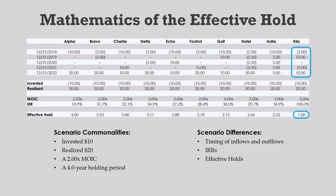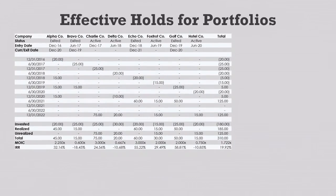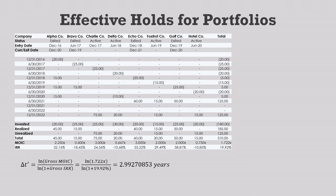So that's how the effective hold formula works for individual deals. But the power of the approach is most evident when we are looking at portfolios that have many inflows and outflows. Here is the gross cash flow series we've been working off of for the last three episodes. Over a period of 6 years, we have 20 different inflows and outflows. With the effective hold, it's easy: take the natural log of the gross multiple, 1.722x, divided by the natural log of 1 plus the gross IRR of 19.92%, and this gives us an effective hold of 2.99 years.